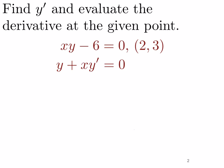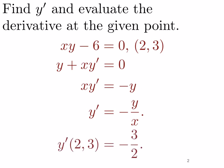Now we need to solve for y prime. We'll subtract y from both sides, then divide by x. So we get that y prime is equal to minus y over x. To finish the problem, we need to plug in y equals 3 and x equals 2. This gives us y prime at the point (2, 3) is minus 3 over 2.